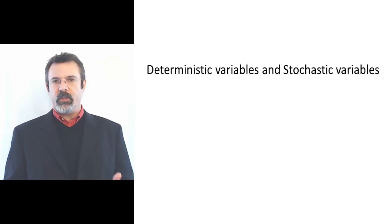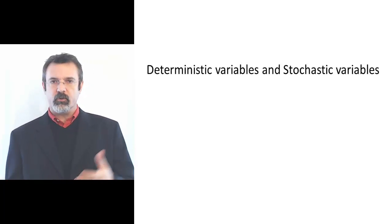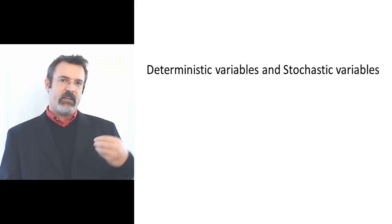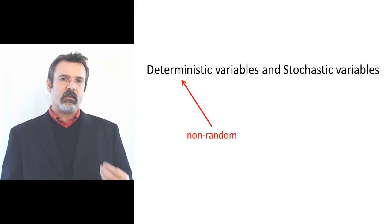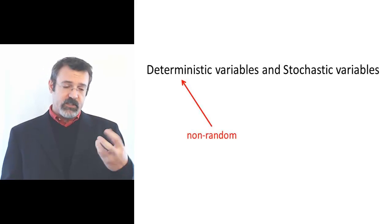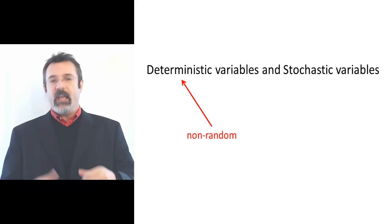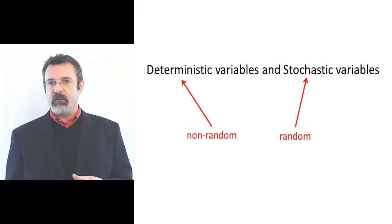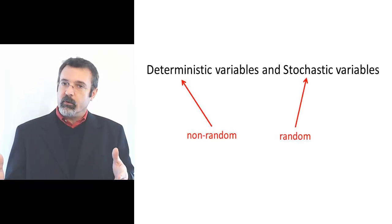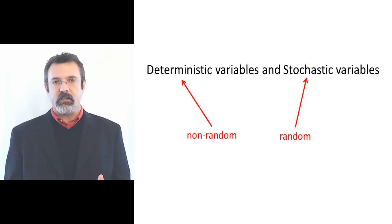When we measure things, we typically use one of two types of variables. A deterministic variable is a variable that takes on some value. A stochastic variable is a variable that can take on many different values with different probabilities.